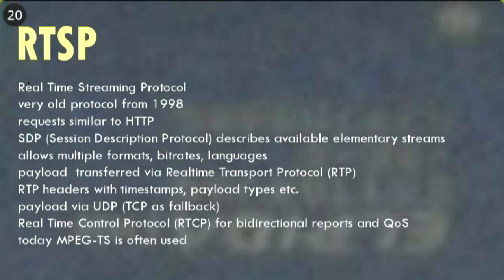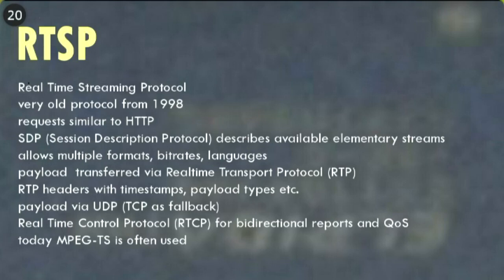There's also RTCP, the Real-Time Control Protocol, which generates sender and receiver reports so you can assess quality of service. Nowadays a lot of people use MPEG transport streams instead of separate elementary streams — this is simpler since you often have a transport stream upstream anyway. But you buy that simplicity with network overhead and loss of flexibility, because MPEG-TS is already a format designed for lossy connections with timestamps built in, so you can no longer independently switch video bitrate and audio language — which is kind of a disadvantage.